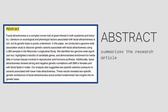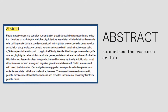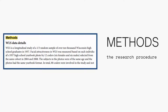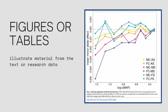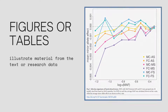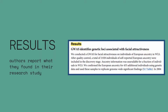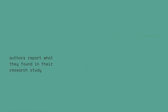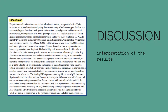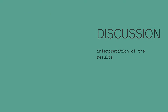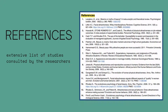Here are a few sections to look for. First, an abstract — this summarizes the research article. Materials or methods — this describes the research procedure. Figures or tables that illustrate material from the text or research data. Results — this is where the authors report on what they found in their research study. Discussion section — this is an interpretation of the results. And references — an extensive list of studies consulted by the researchers.